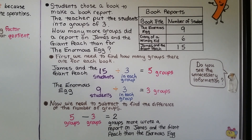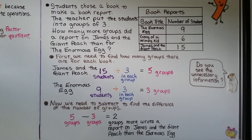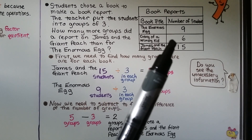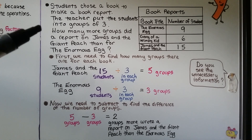There are 2 more groups that wrote a report on James and the Giant Peach than the Enormous Egg. Do you see the unnecessary information in the table? The information on Diary of a Wimpy Kid — that 6 students were doing a report on that — was not needed. It didn't even get mentioned in the word problem. So sometimes in word problems there's unnecessary information that we need to ignore. That's why it helps to circle important numbers or underline important facts.